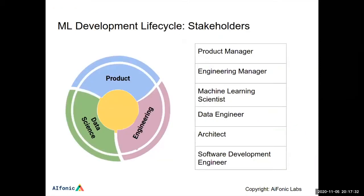Before going into the problem definition part, there are various stakeholders in a typical machine learning product development lifecycle. The three main teams are the product team, engineering team, and data science team. Roles include product manager, engineering manager, machine learning scientist, data engineer, architect, software development engineer, and other stakeholders from the business team as well.